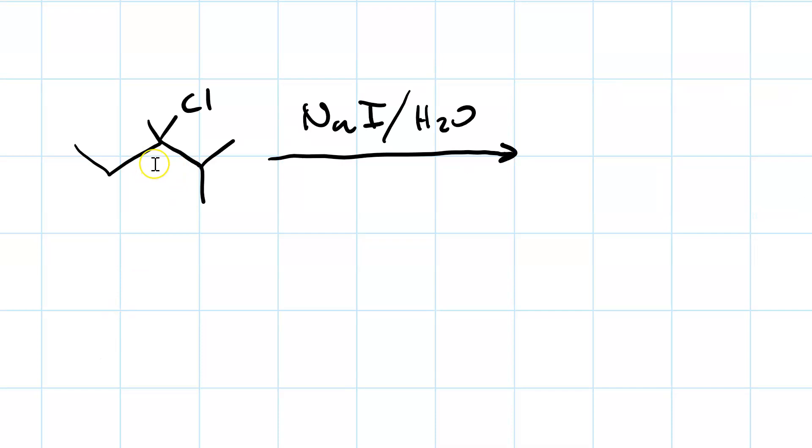Say I react a tertiary alkyl chloride with sodium iodide in water. Well, iodide is a strong nucleophile. Strong nucleophiles favor SN2. However, this is a tertiary substrate, so it can't go SN2.